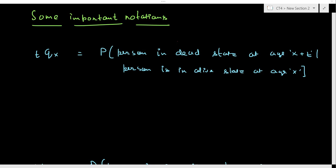Now let's discuss a few important notations relating to the Markov jump process. You would be very familiar with these notations if you have already studied subject CT5. In CT5, this Markov jump process — being the process of transition from an alive to a dead state — forms the basis of CT5, where you are valuing life insurance contracts based on the probabilities of living and dying. The two-state model forms the foundational structure on which CT5 develops.